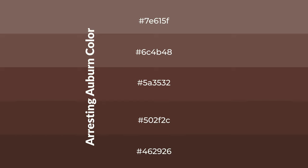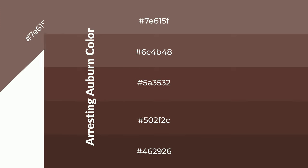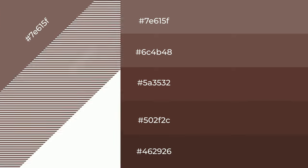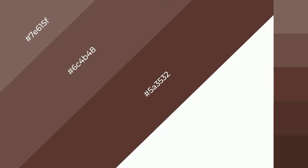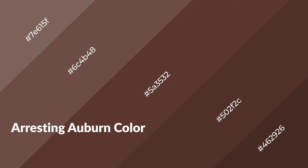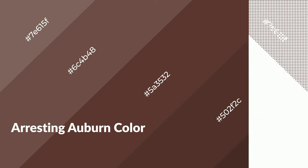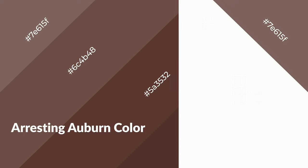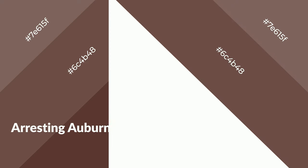To generate shades of a color, we add black to the color. It is used in patterns, 3D effects, and layers. Shades create depth and drama. Arresting auburn is a warm color and it emits cozier and active emotion.